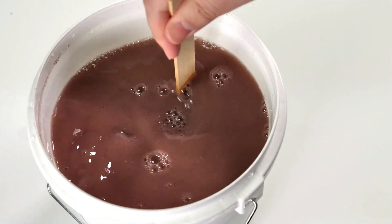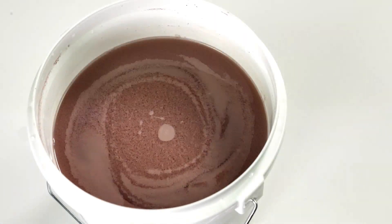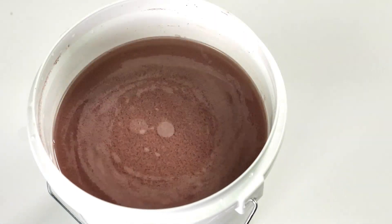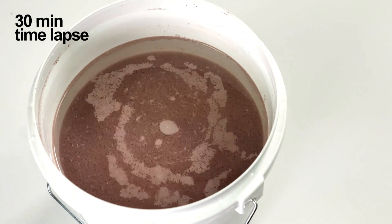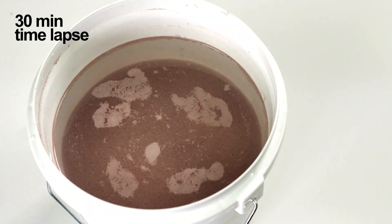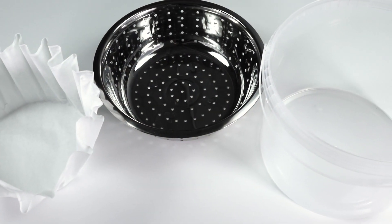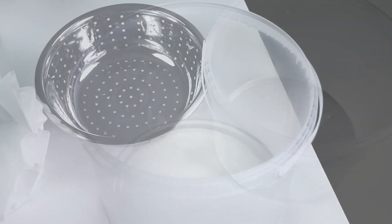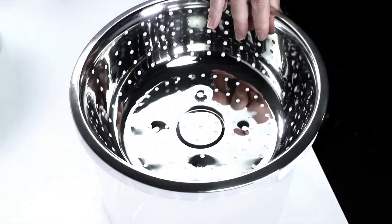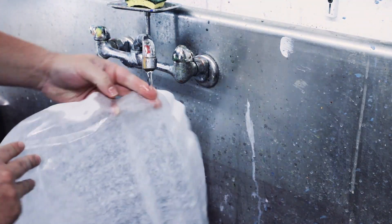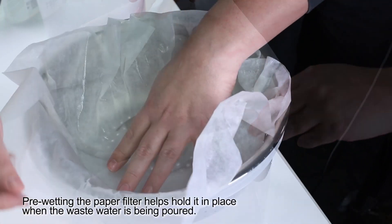The paint solids will slowly accumulate and sink in the bucket, and the water on top will begin to clarify. While the mixture is separating, prepare for the next step by placing the colander into the large clear bucket, then gently wet and place the paper filter into the colander.